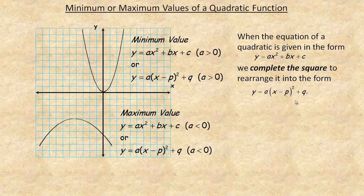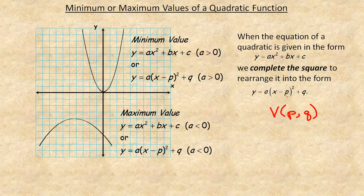The vertex is where that min or max occurs. The vertex of the vertex form equation is at p, q — not negative p, q. Remember, the formula is actually x minus p. So the vertex is at p, q. This is the x squared in the vertex form and it's always x minus p.